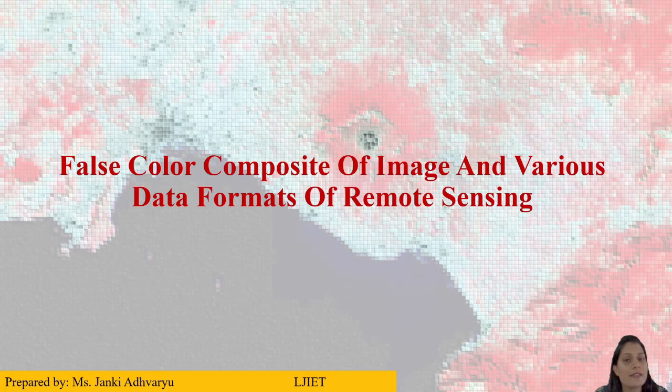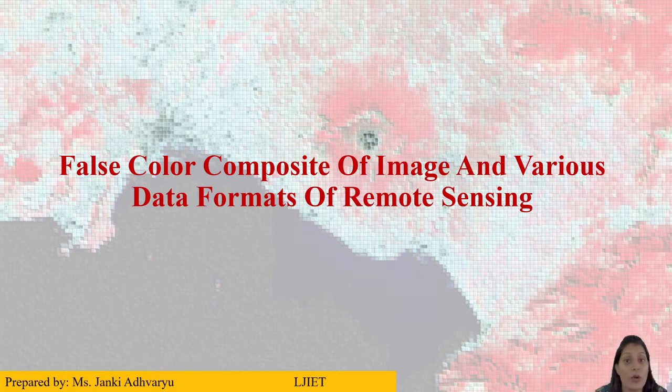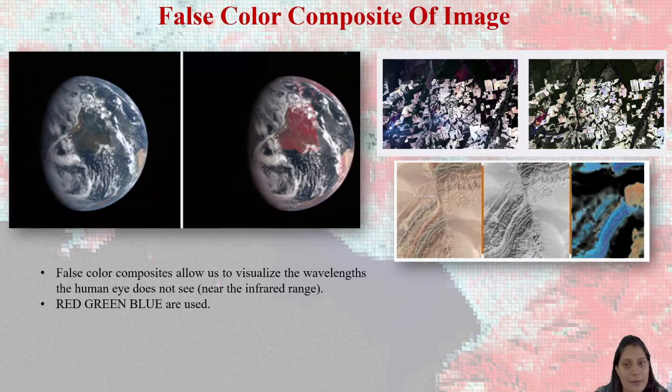In the previous session, we have discussed about the image resolutions: spatial, spectral, radiometric, and temporal. I have shown you the images that are multibands. We have a number of bands and you need to check how many bands, what band is what color. So let's see what is false color composite and what are the various data formats in which data is stored.